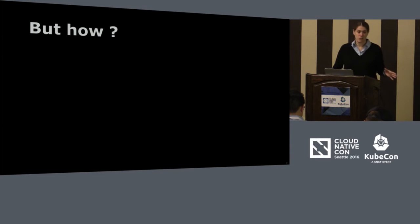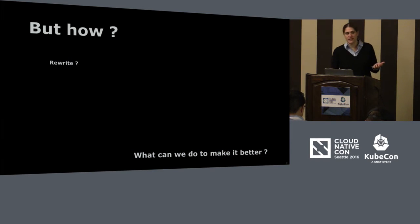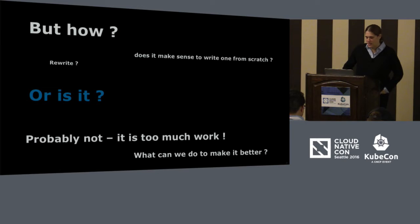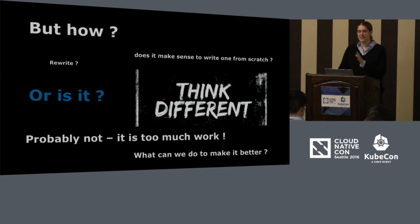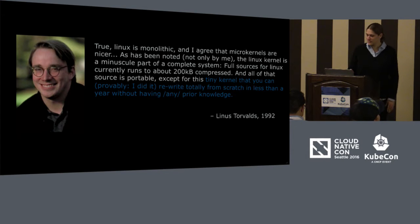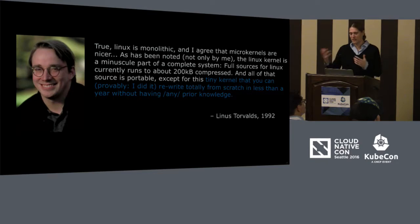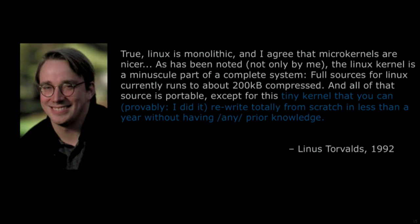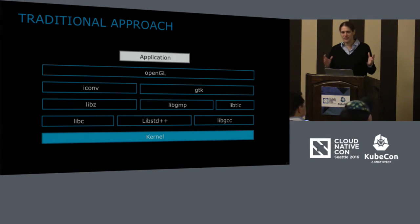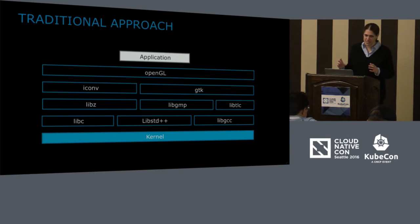How can we make it better? Can we rewrite the operating system? That's probably a lot of work. What about starting from scratch? I encourage you to think differently. This is like the old argument between microkernel and monolithic kernel. Linus Torvalds wrote the Linux kernel without any prior kernel knowledge in about a year, which means it's not that hard — we can do it. And that's exactly what the unikernel community did: they rewrote an operating system.